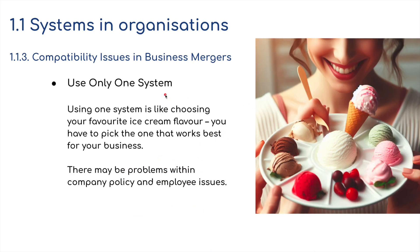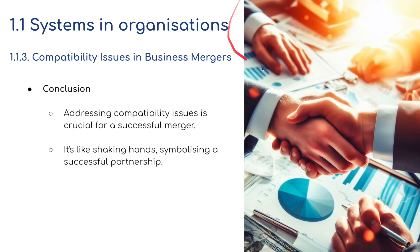Another option is to use only one system — picking the best one, like choosing your favorite ice cream. You need to justify which system would work best for the business and why. There may also be problems with company policies and employment issues when choosing one system over another.